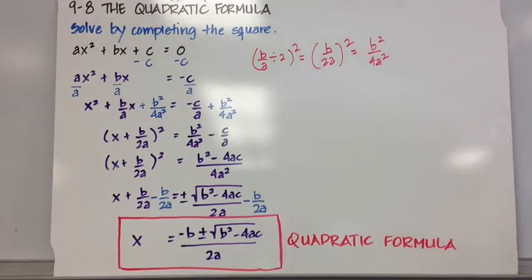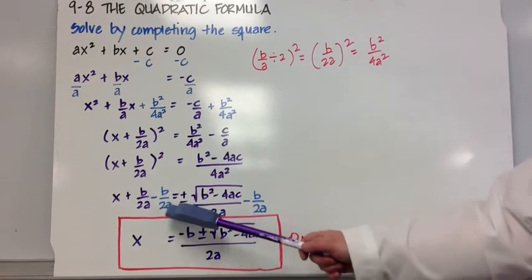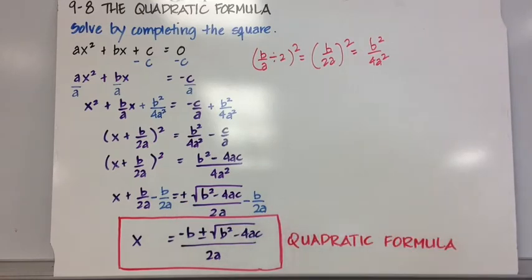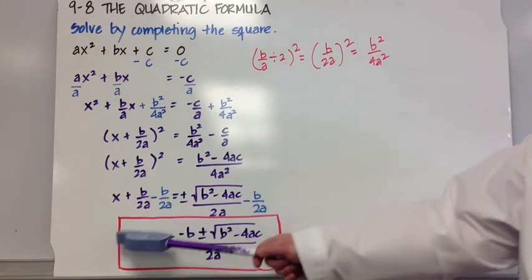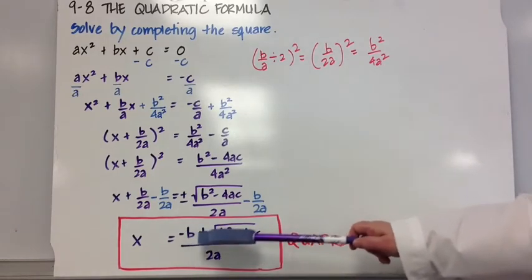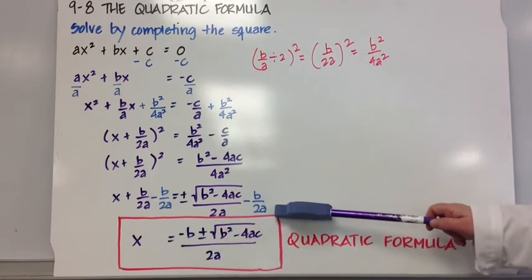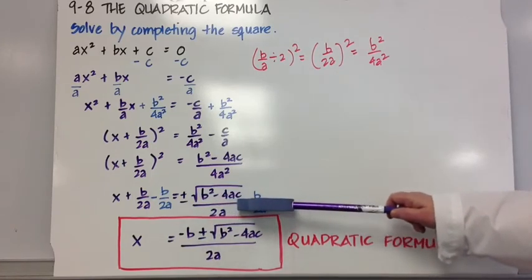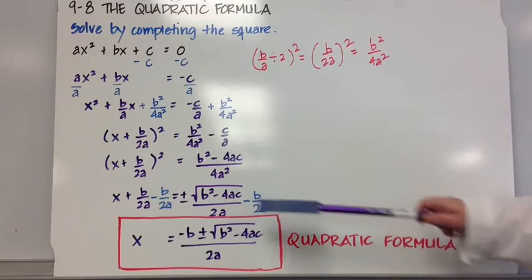And again, remember I'm solving for x by completing the square. So I want to subtract b over 2a from both sides of the equation, which leaves me x on one side of the equation. And that would result in minus b over 2a plus or minus the square root of b squared minus 4ac. Those have a common denominator.